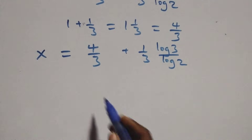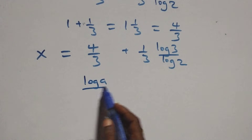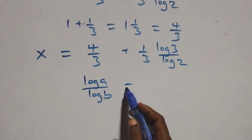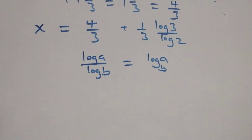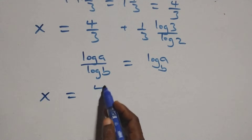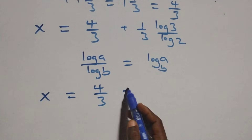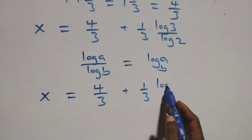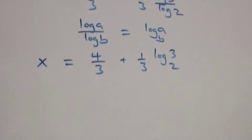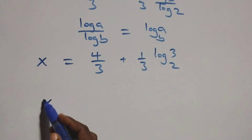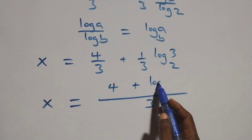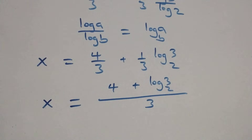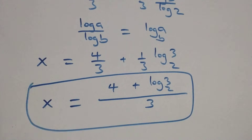Then we apply the change of base rule: log a over log b is the same as log a to base b. So here we have x equals to 4 over 3 plus 1 over 3 times log 3 base 2. Then bringing this together as one fraction, we have x equals to 4 plus log 3 base 2, all over 3. This is the value of x.